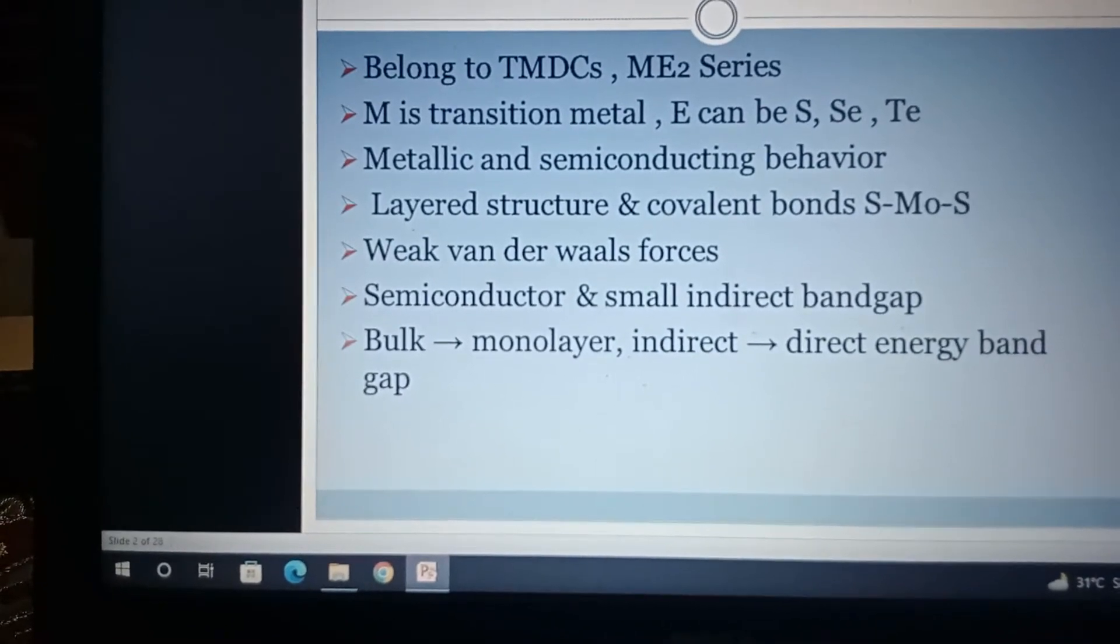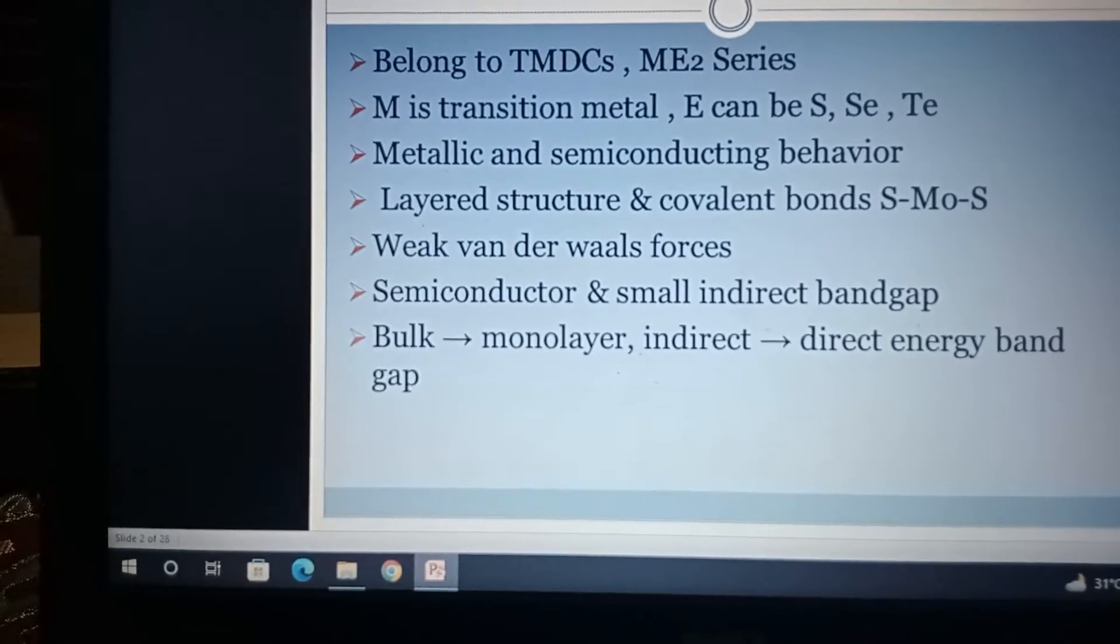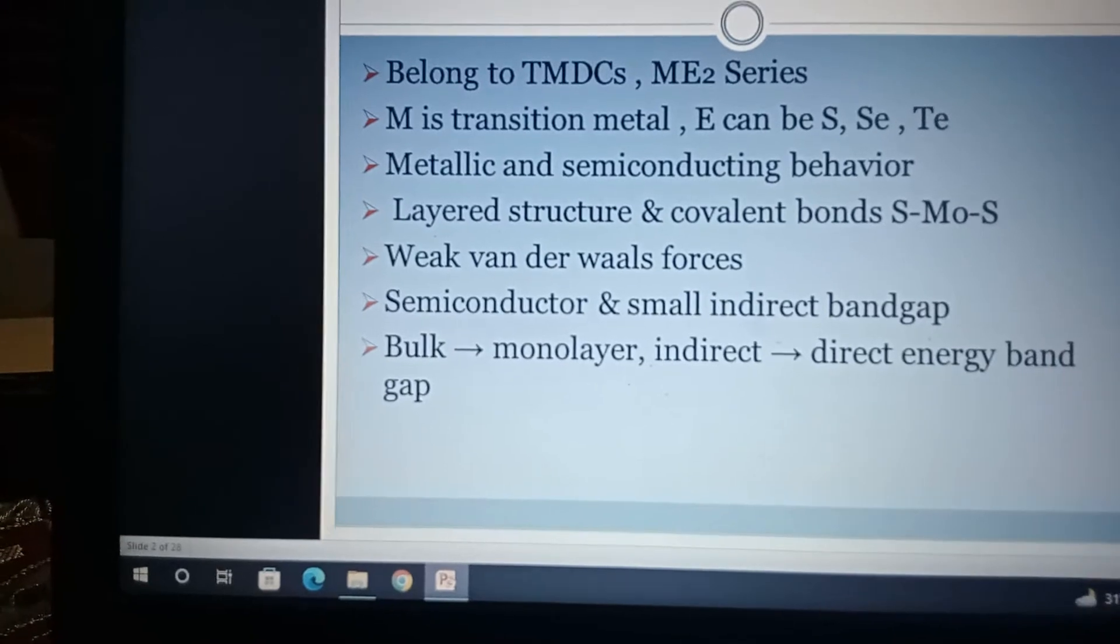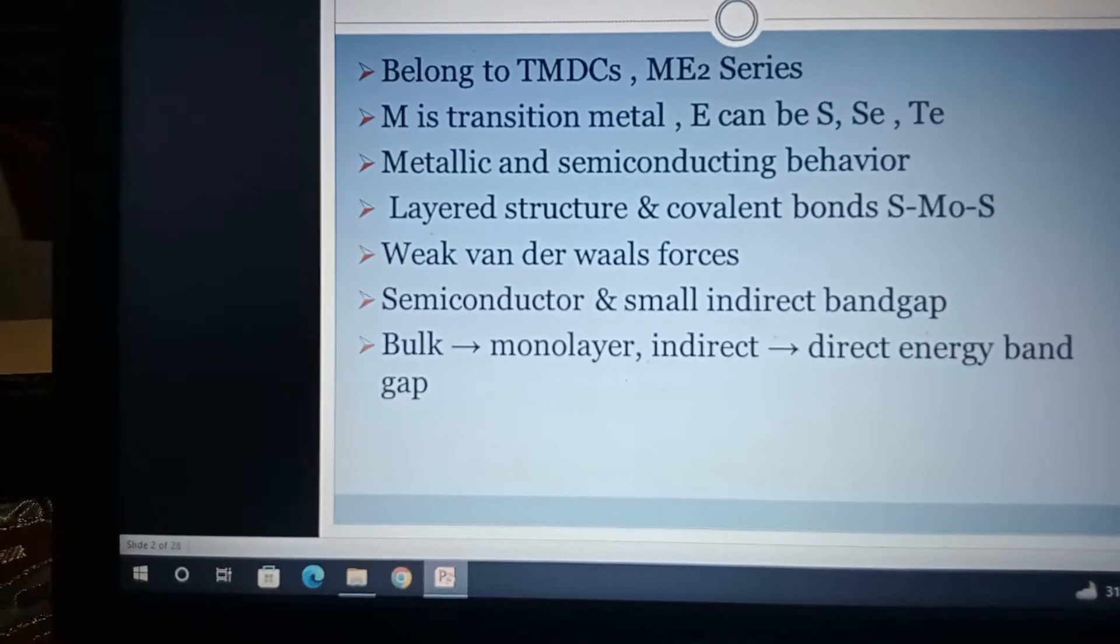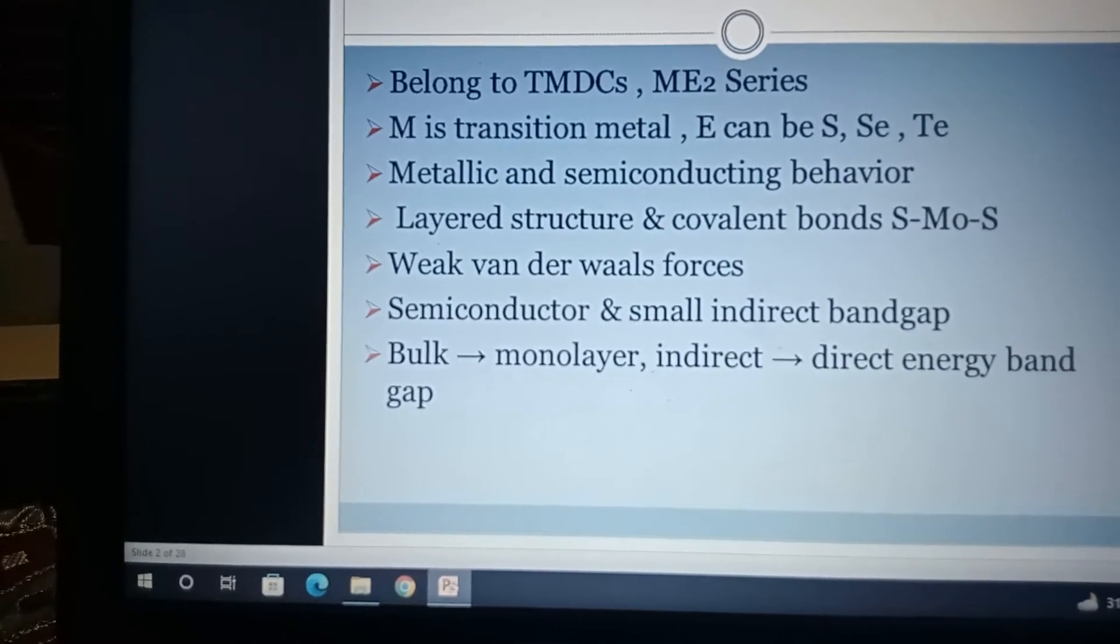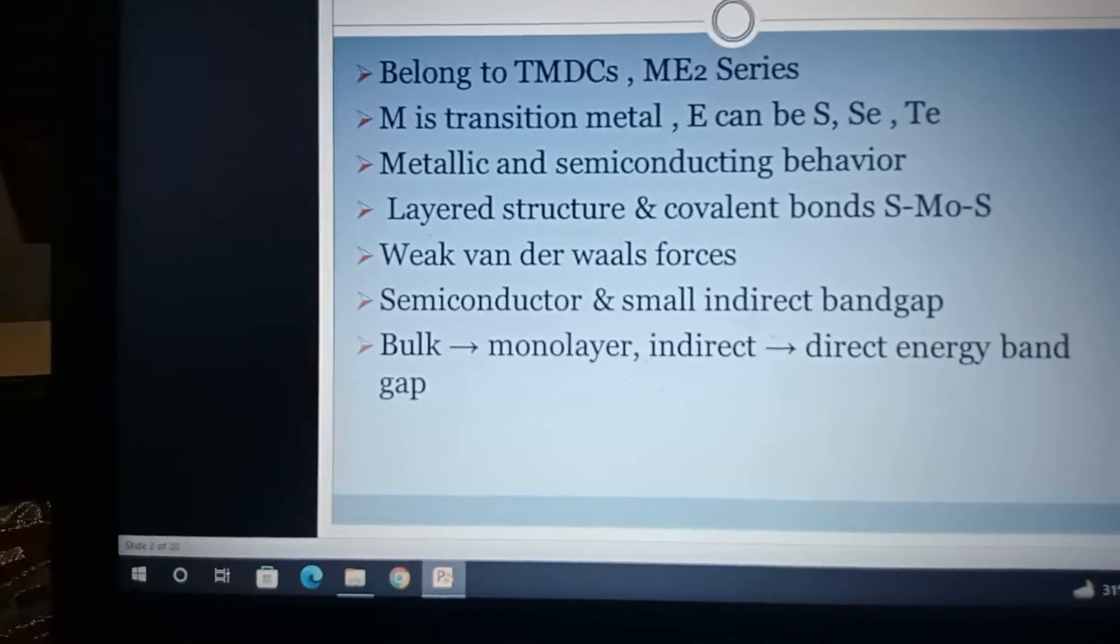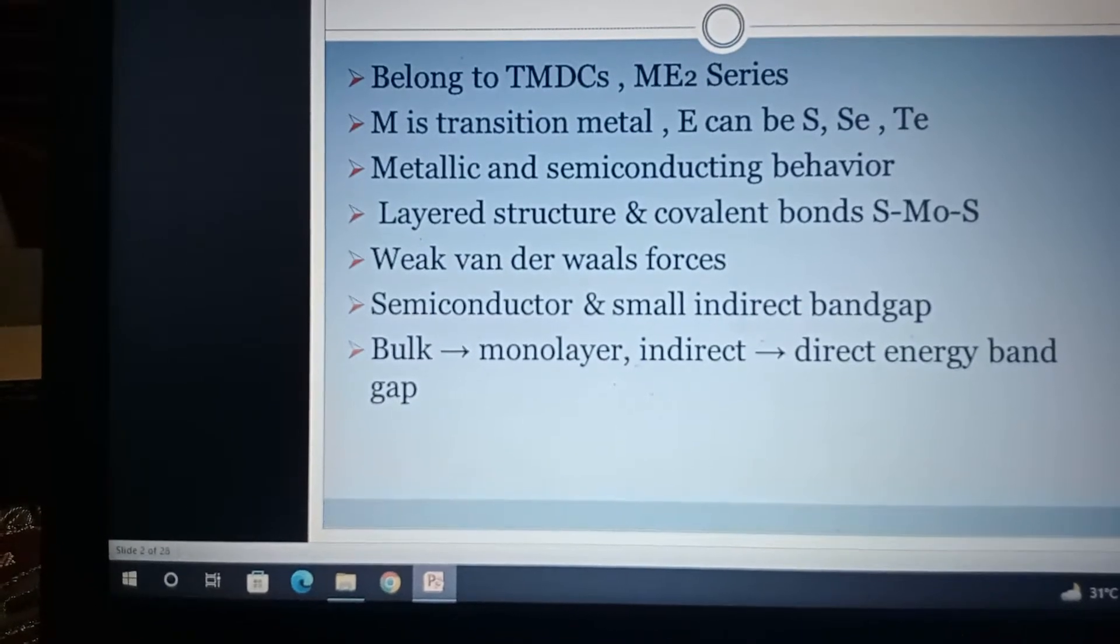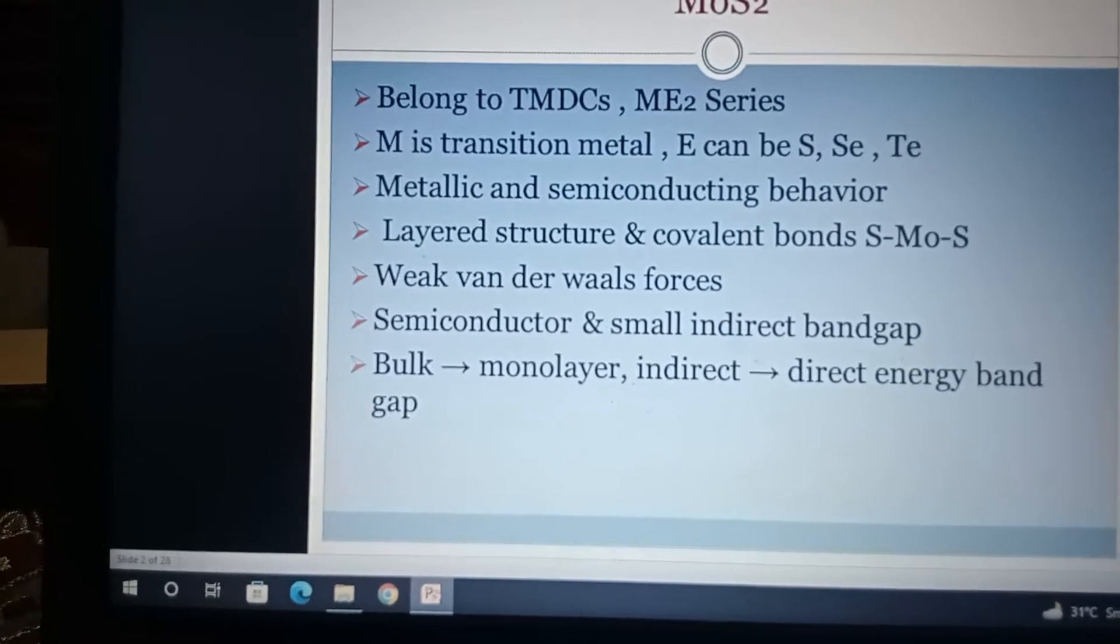It is very useful to know that in monolayer, MoS2 exists in bulk state. When you deal MoS2 in bulk nature, you find that it has indirect bandgap. And when you deal MoS2 as monolayer, you will find that it has direct energy bandgap. In simple words, in bulk, bandgap is indirect, and when you go to monolayer, the indirect bandgap becomes direct bandgap.